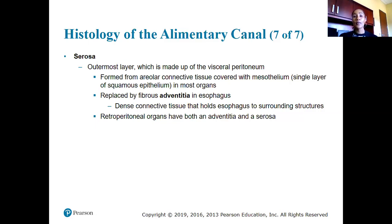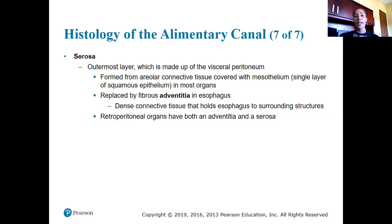The outermost layer of the alimentary canal is the serosa, made up of the visceral peritoneum. It's formed from areolar connective tissue and covered by mesothelium — a single layer of squamous epithelium. In the esophagus, it's replaced by fibrous adventitia, the dense connective tissue that holds the esophagus to surrounding structures. Retroperitoneal organs have both adventitia and serosa.